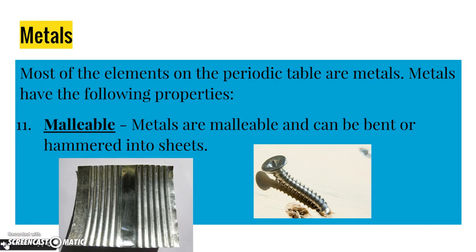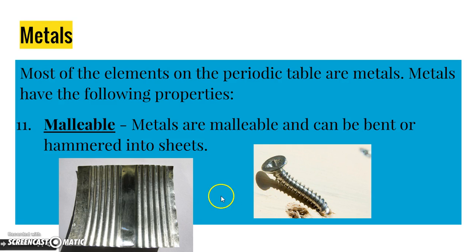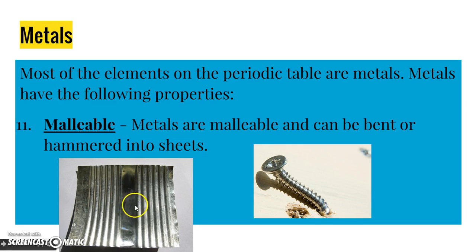Metals are also malleable — that means they can be bent or hammered into thin sheets. Like this screw right here got bent because it's made out of metal; it's malleable. Or this sheet of metal, like tin off a roof. Metals are malleable and can be hammered into thin sheets or bent.